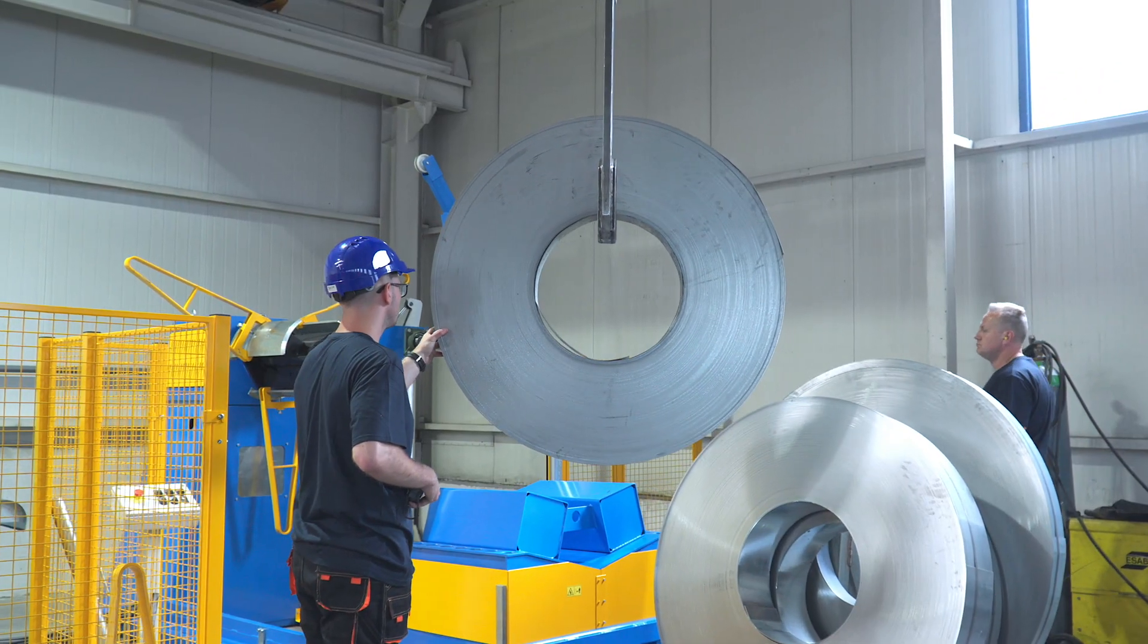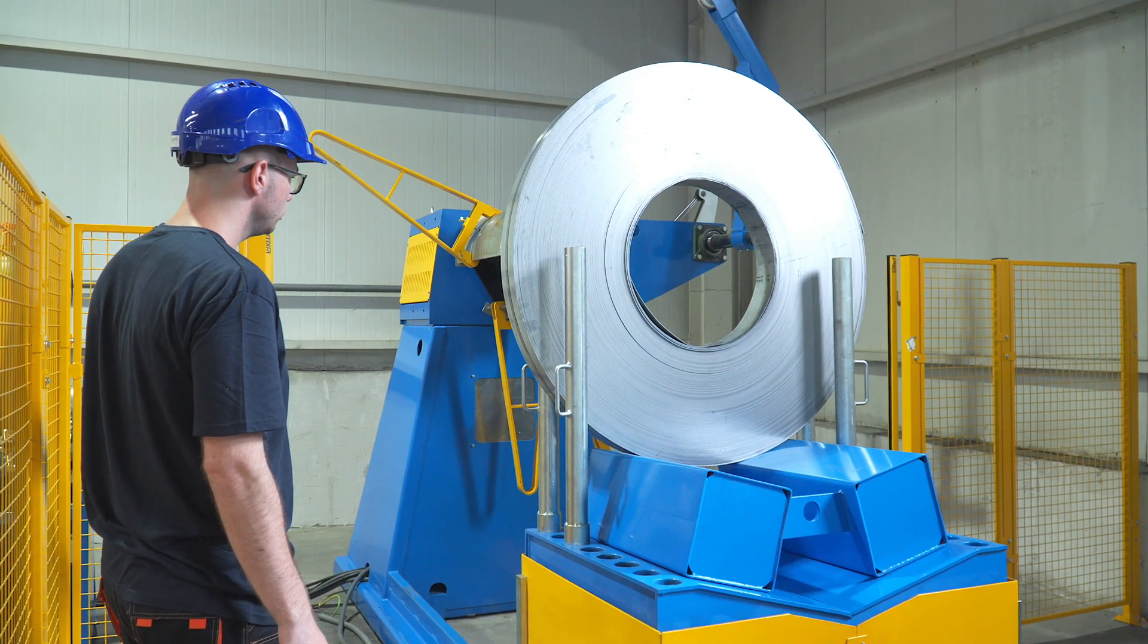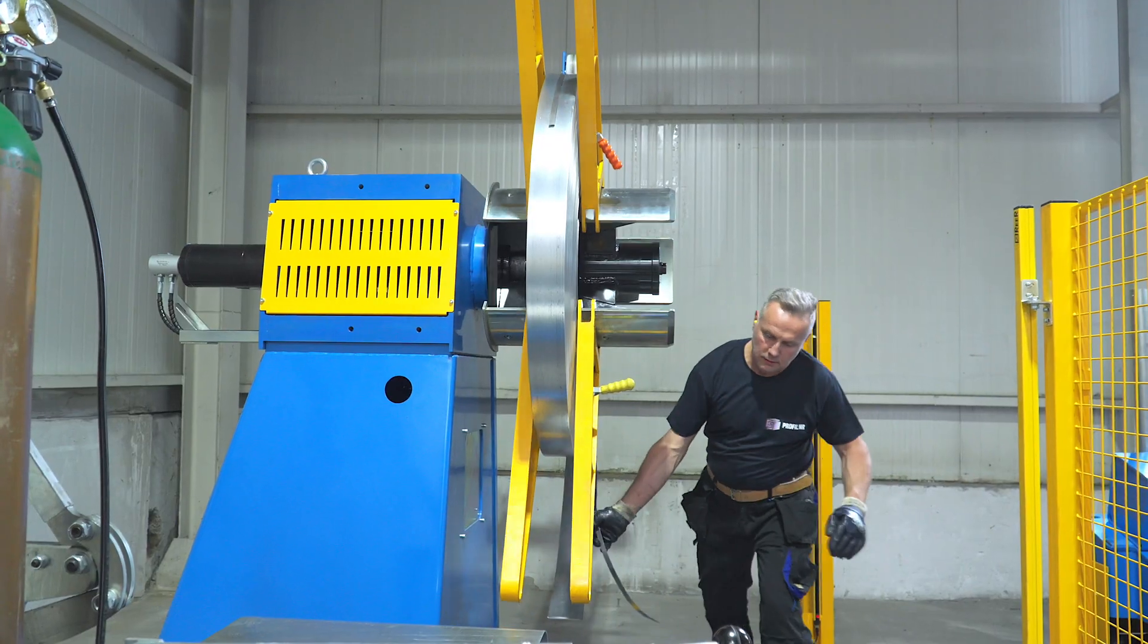We see how a strip of sheet steel is put on a decoiler. It is now pulled through the profiling line.